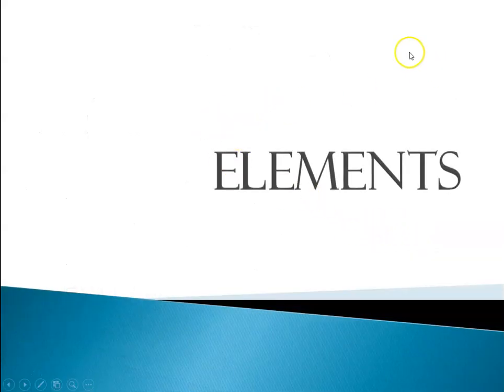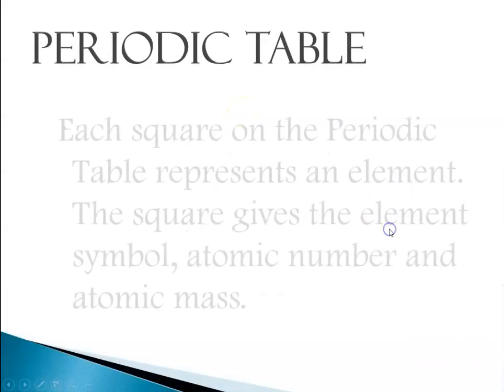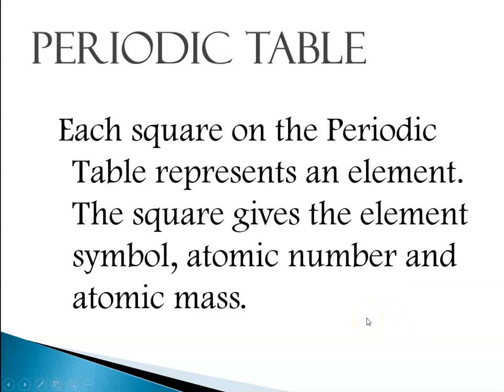That leads us to talking about elements, and this is a brief introduction to the periodic table. Later on this year, sometime around October, we will talk about the periodic table at great length, but for now let's start with an intro. The periodic table is a table in which each square represents an element. Each square gives you the element's name, symbol, its atomic number, and its atomic mass. The periodic tables that I will hand out to you may have a few more things.